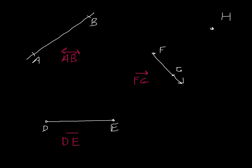Our last one is a point. We don't have a specific line or symbol above it for a point, so it is simply written as point H. We identify that dot as point H.